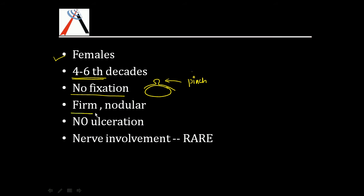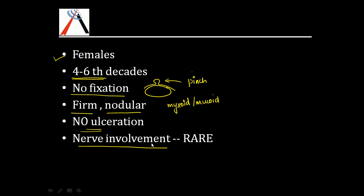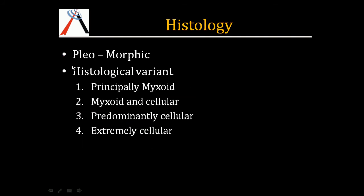The tumor is firm and nodular on palpation; sometimes cystic degeneration may be felt due to accumulation of myxoid and mucoid tissue inside the tumor. There is no ulceration and no nerve involvement, even though the facial nerve passes through the parotid gland.